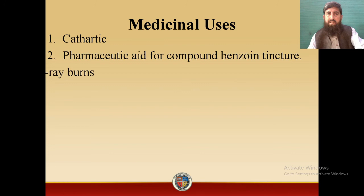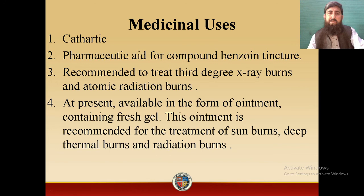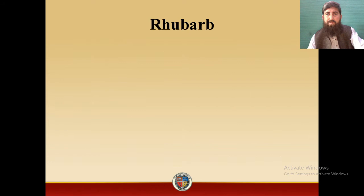Medicinal uses of Aloe: it is used as a cathartic agent. It is also used as a pharmaceutical aid for compound benzoin tincture. It is recommended to treat third-degree X-ray burns and atomic radiation burns. Currently available in the form of ointment containing fresh gel, it is recommended for treatment of sunburns, deep thermal burns and radiation burns. It relieves pain and itching and tends to minimize ulceration.